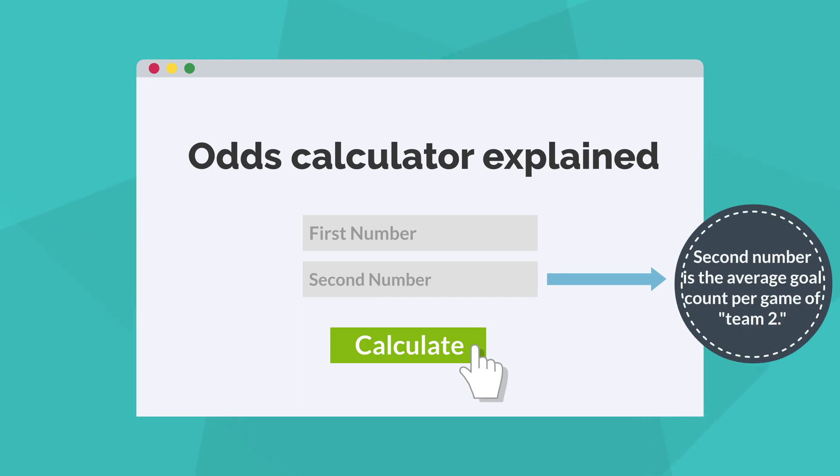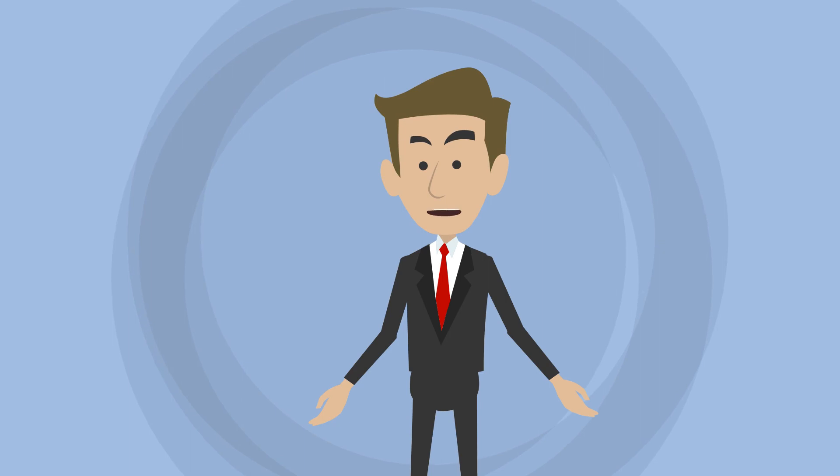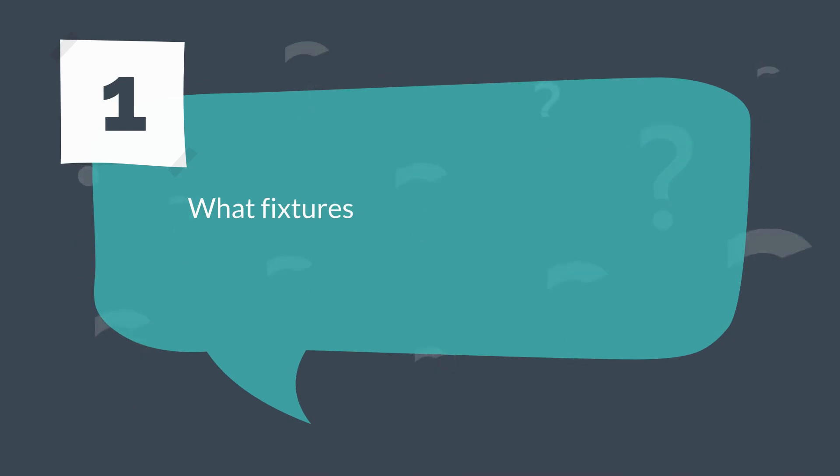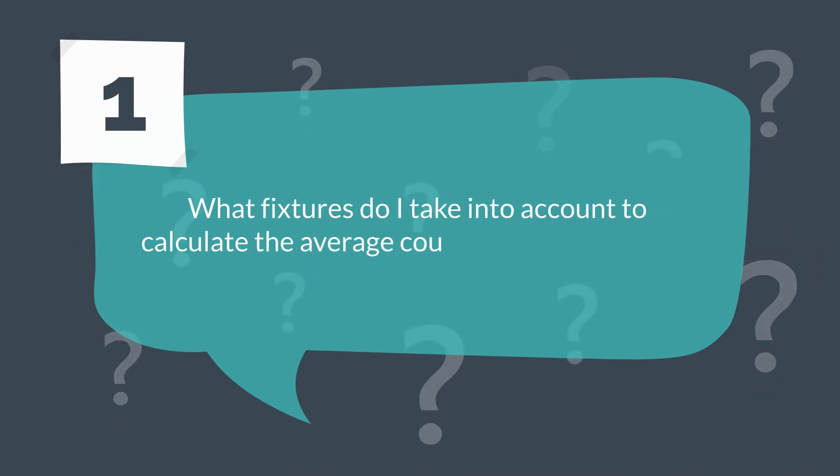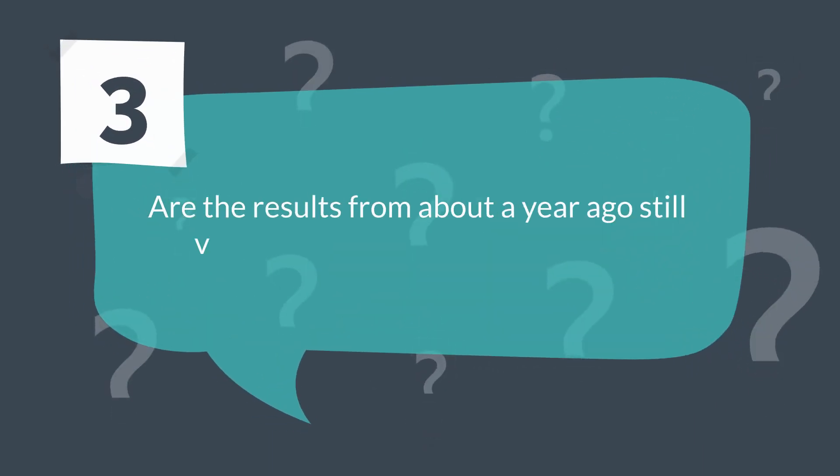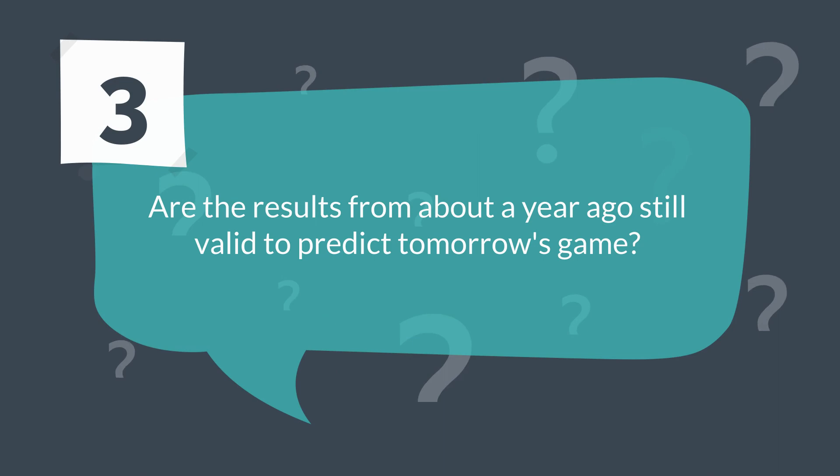This is, however, not so simple. Make sure to answer the following questions first: What fixtures do I take into account to calculate the average count of goals per game? Is the home stadium a significant advantage? Are the results from about a year ago still valid to predict tomorrow's game?